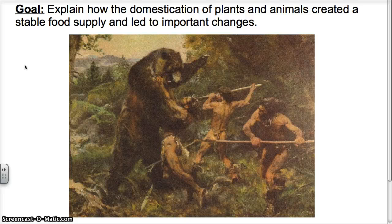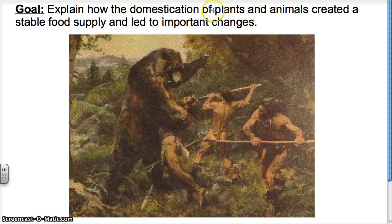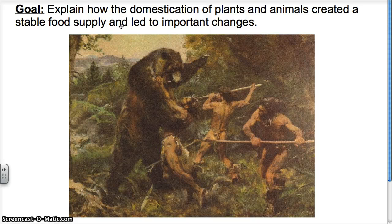Welcome back to World History. This is Mr. McCall. Today's lesson, our goal is for you to be able to explain how the domestication of plants and animals created a stable food supply and led to important changes. We're going to look at four different areas: how it led to changes in four important different areas.